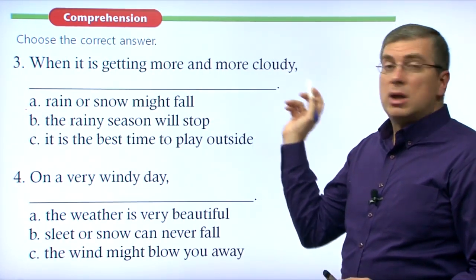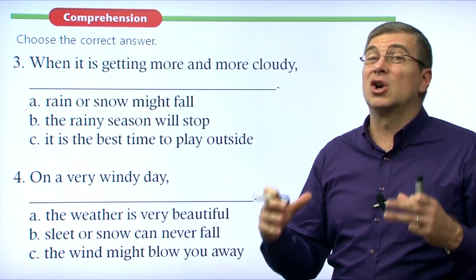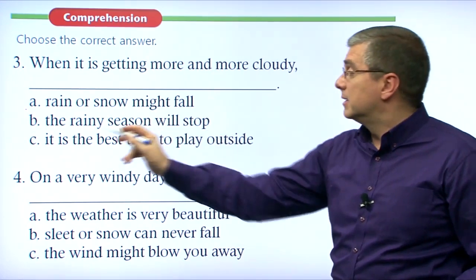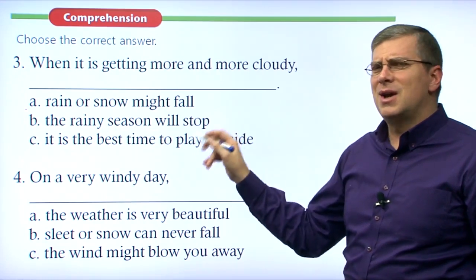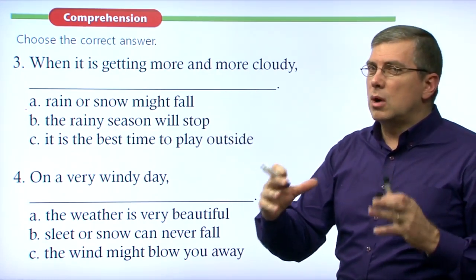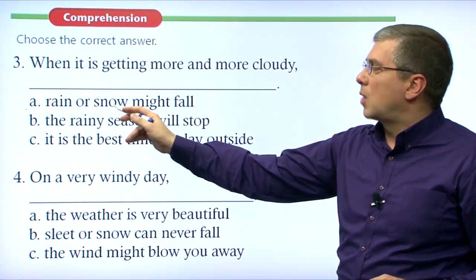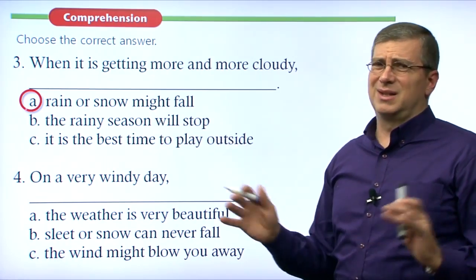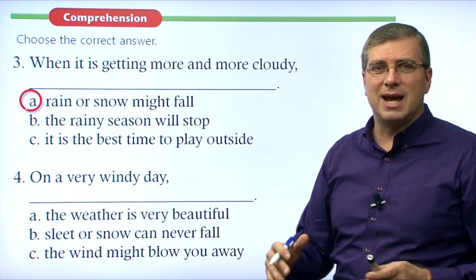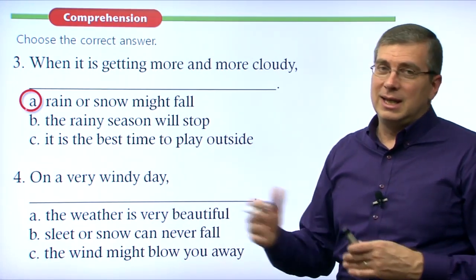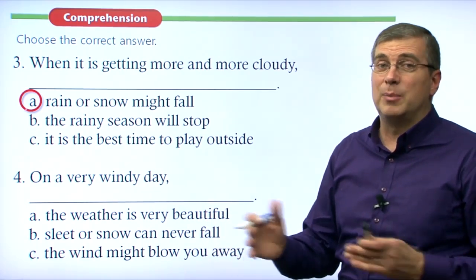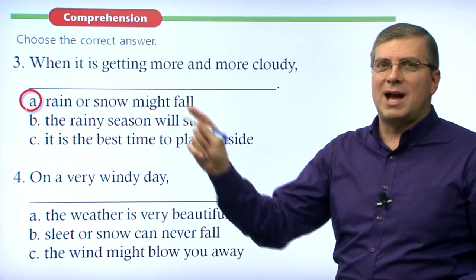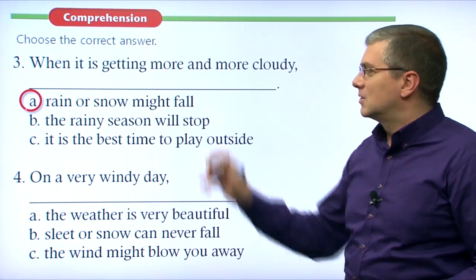Number three: when it is getting more and more cloudy outside, what do you think is going to happen? A: rain or snow might fall. B: the rainy season will stop. C: it is the best time to play outside. More and more clouds are gathering — probably A. Rain or snow might fall. B doesn't make sense — clouds getting together doesn't mean the rainy season stops. C — your mother would say stay inside, it might rain! So A is our right answer: rain or snow might fall.